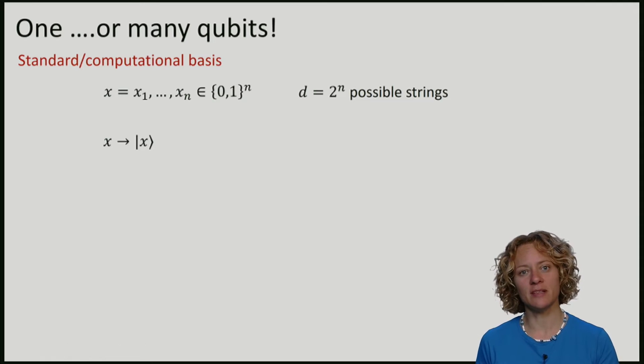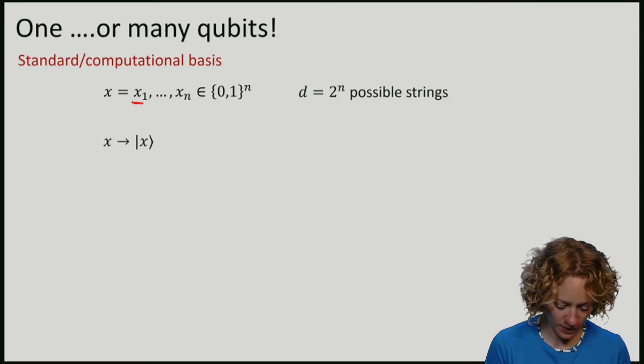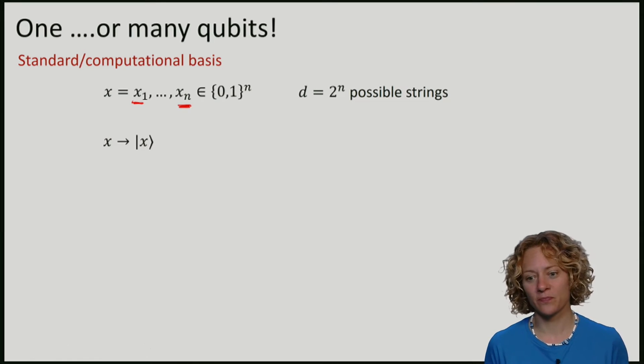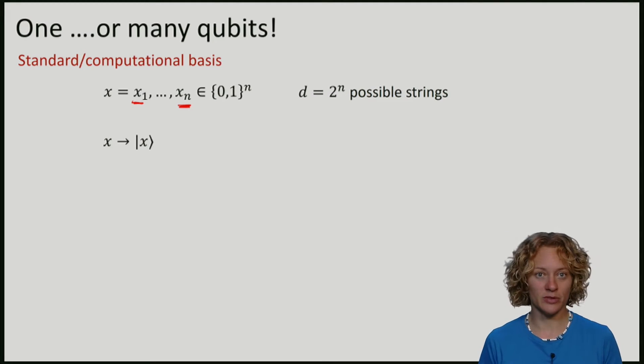Classically, if we have n bits, we can write this down as a string of numbers x1 up to xn. So in total, there are 2 to the n possible strings.